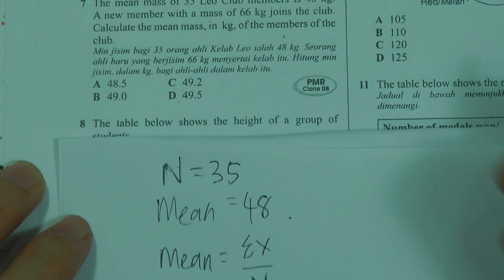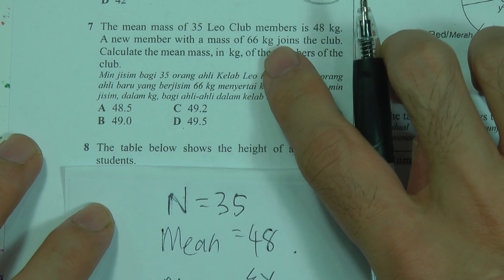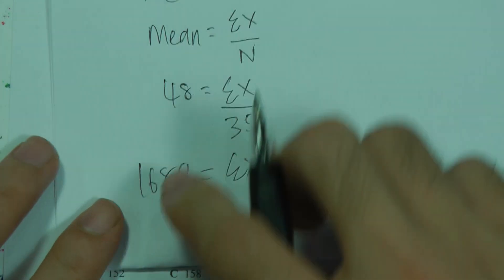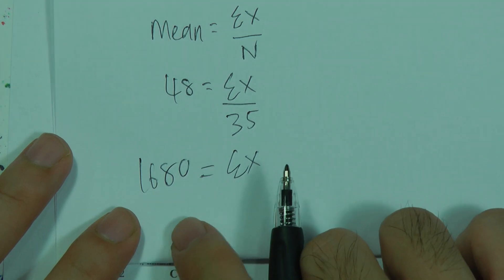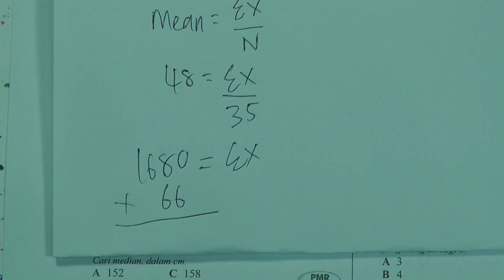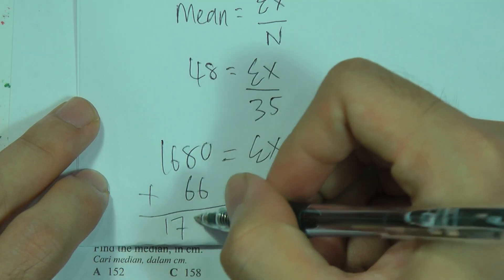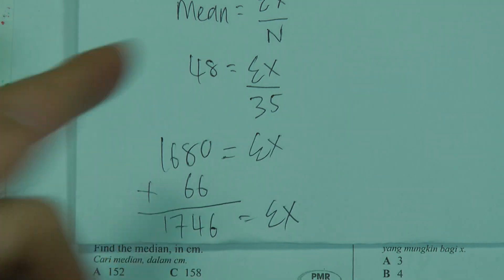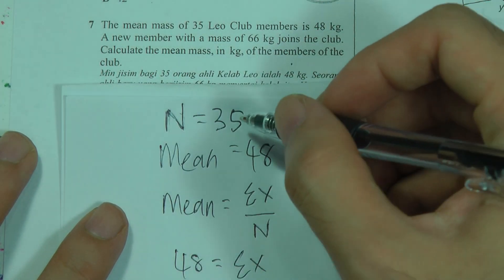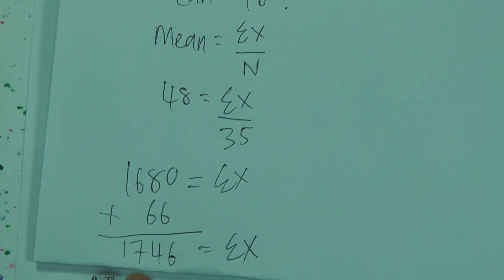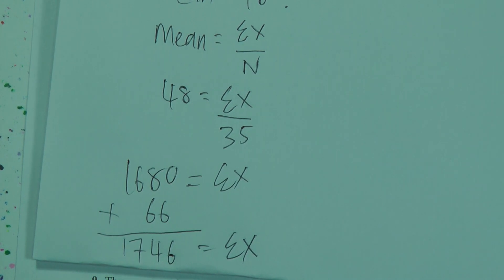A new person with mass 66 kg joins, so the new total sum of x becomes 1680 + 66 = 1746 kg. The new number of members n becomes 35 + 1 = 36.